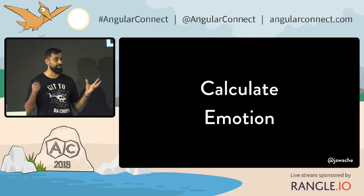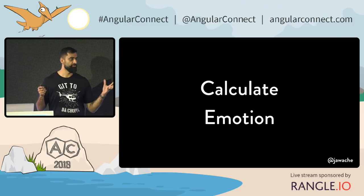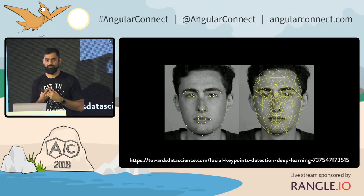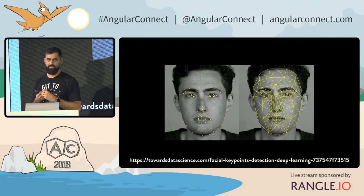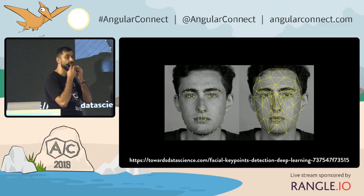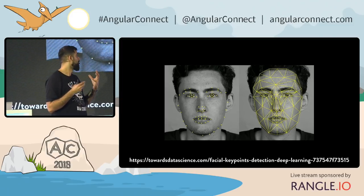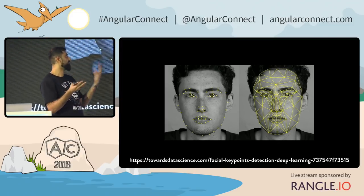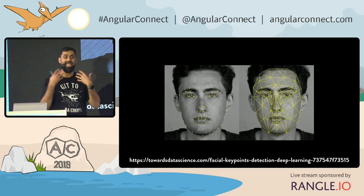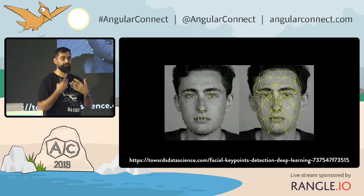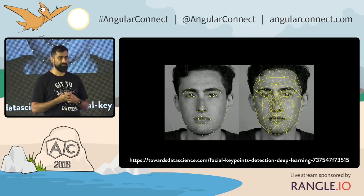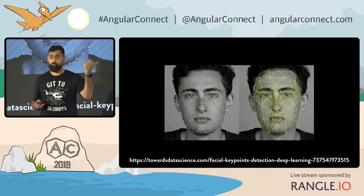The first thing you need to do to calculate emotion is detect the different parts of the face — where are the eyes, the ears, the nose, the chin. There are quite a few different libraries out there which you can use to help you detect the features of a face — JavaScript libraries you can run inside JavaScript. That's step one.